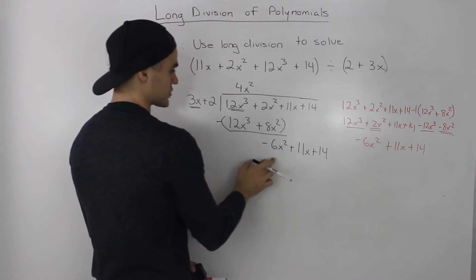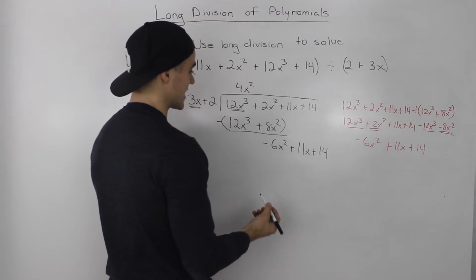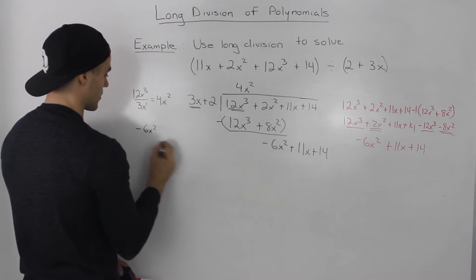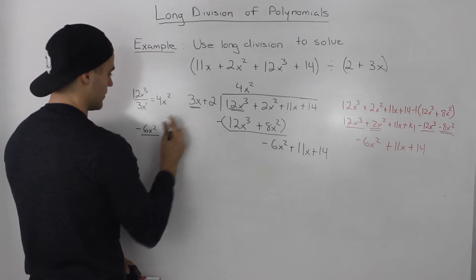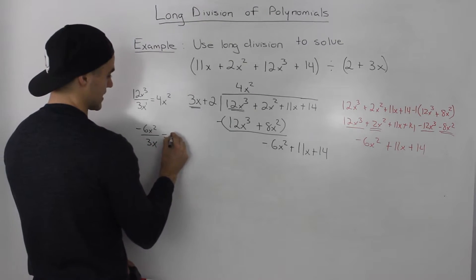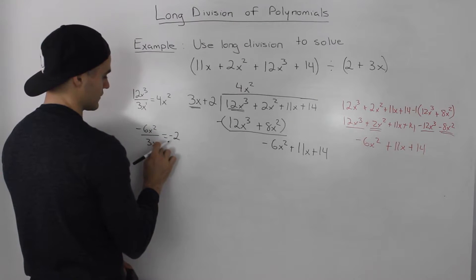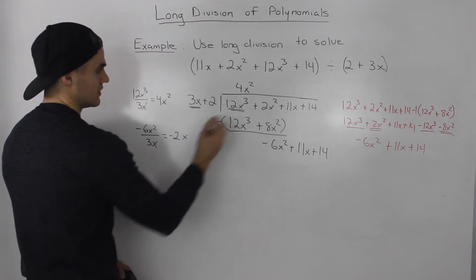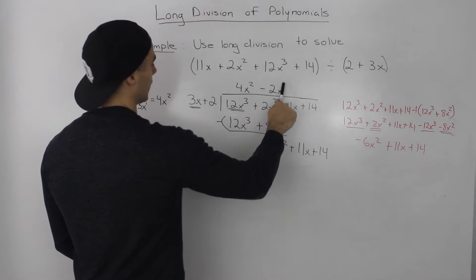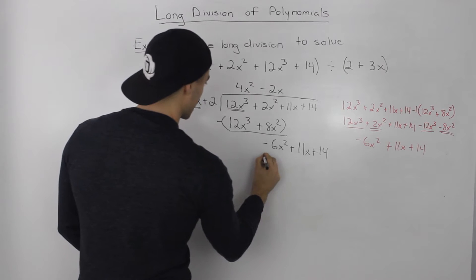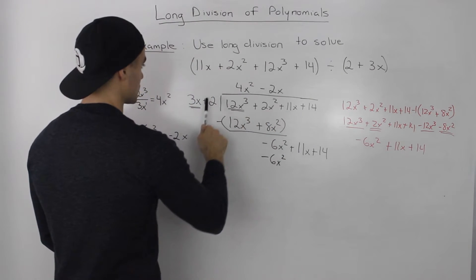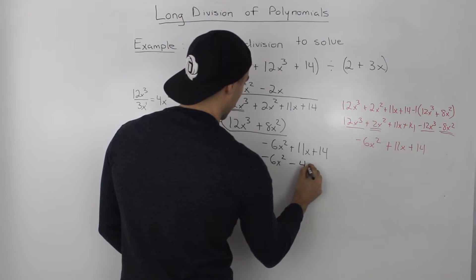Now, how many times does 3x go into negative 6x squared? We can do that on the side: negative 6x squared divided by 3x — negative 6 divided by 3 is negative 2, and x squared divided by x is just x. So it goes in negative 2x times. Then negative 2x times 3x is negative 6x squared, and negative 2x times 2 is negative 4x.